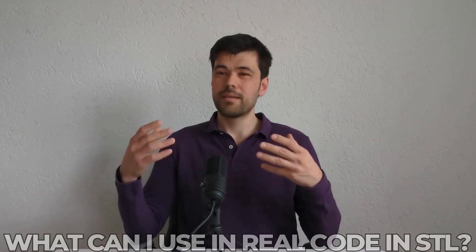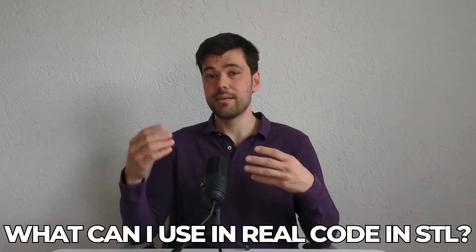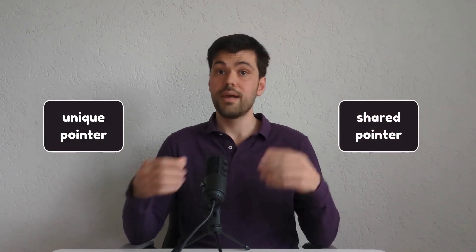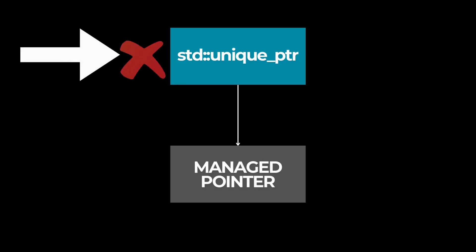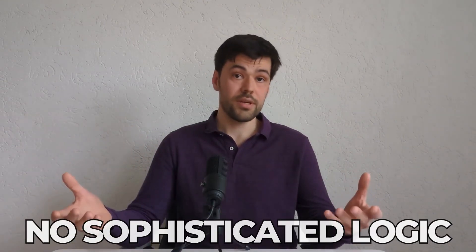Understanding the general idea behind smart pointers is great, but what can I use in real code in STL? There are two general types of smart pointers in STL: unique pointer and shared pointer. Unique pointer is the simplest smart pointer – it owns the object exclusively. It can't be copied, only moved. When the smart pointer is destructed, the managed object is also destroyed. No sophisticated logic, but also no overhead. That is why I use unique pointer by default.